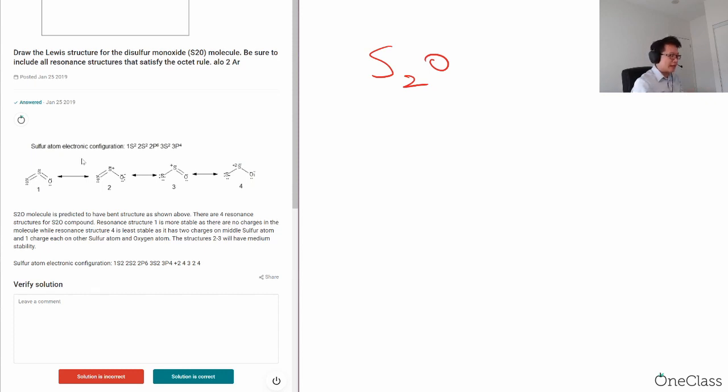First of all, we have to find out the central atom. So S2O, which atom is at the center? Maybe oxygen, maybe sulfur. Okay, so we have two situations over here, but let's figure out which one will be the center atom.